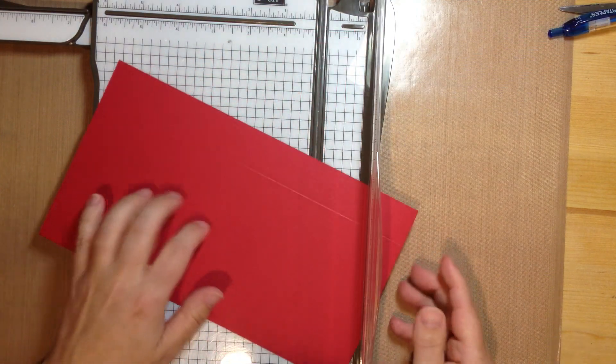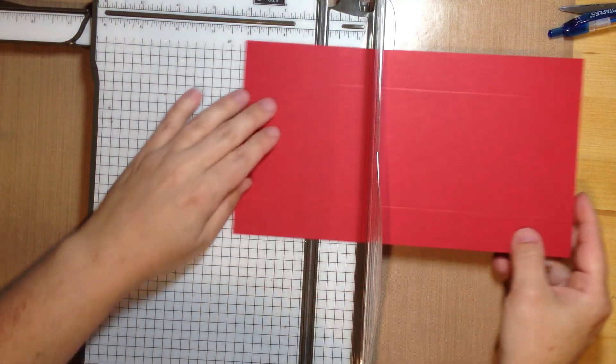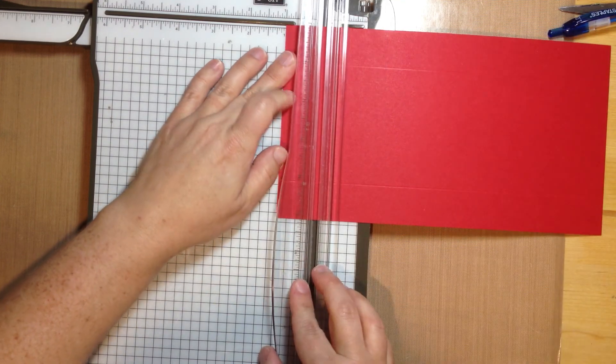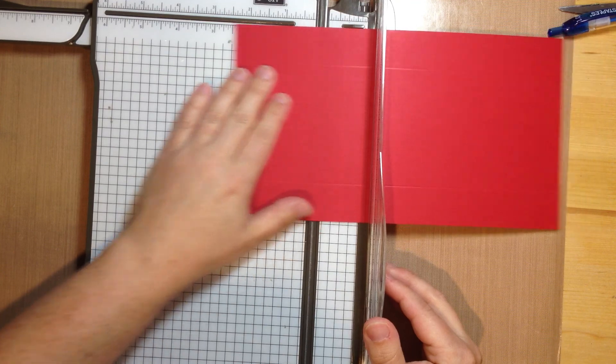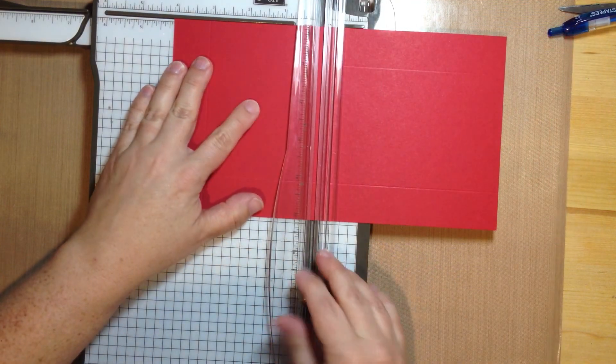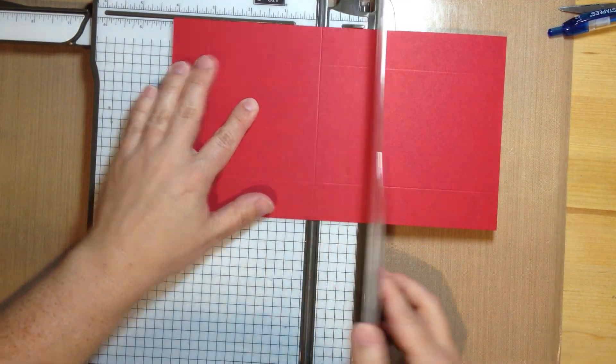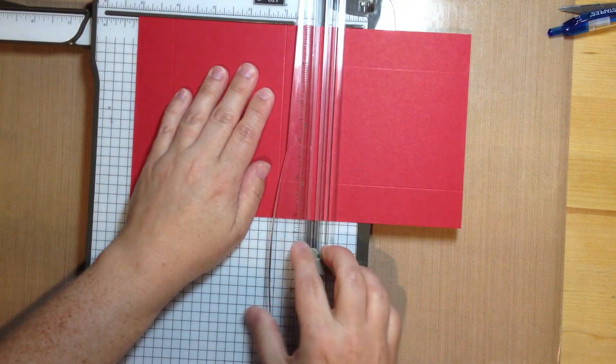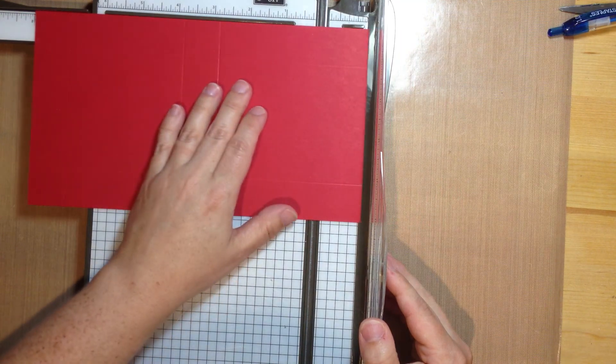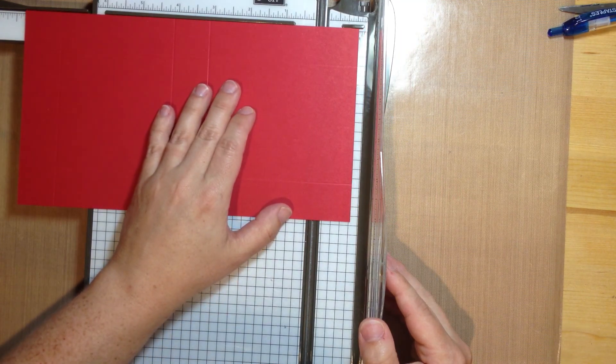Now I am going to rotate it a quarter of a turn and I am going to score at 1 inch. I am going to score at 4 1/8. And I am going to score at 5 1/8. And then the last score mark will be 8 1/4 inches.